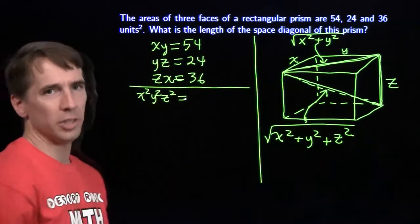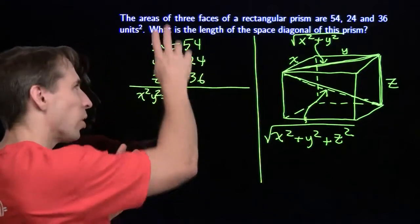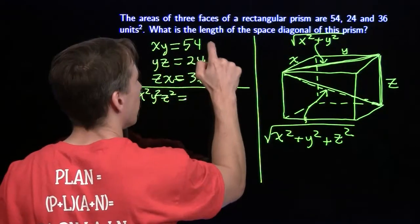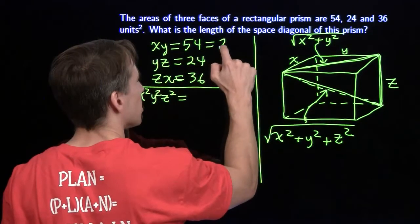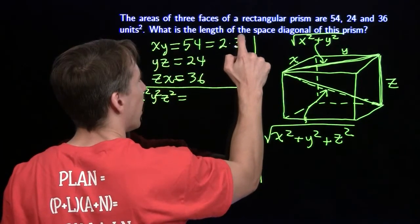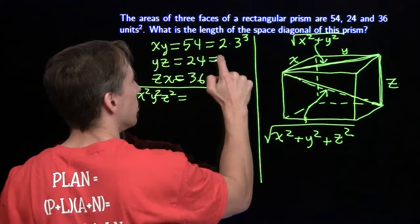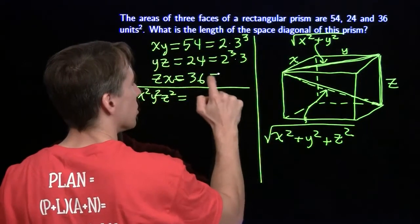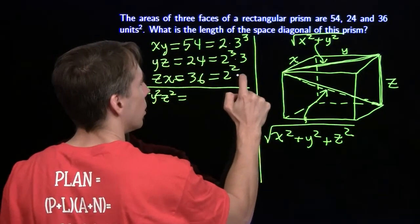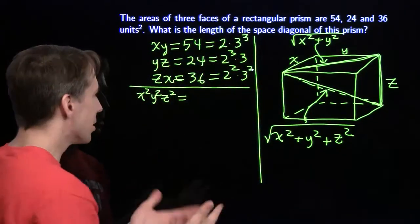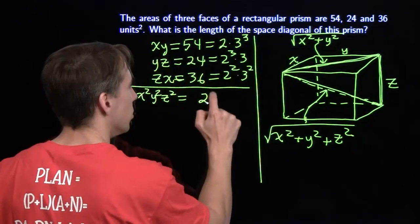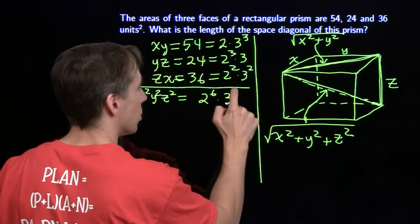Now, over here, I don't want to multiply all these numbers out. I'm going to think, whenever I start thinking about products and divisibility, I start thinking in terms of prime factorizations. This is 2 times 3 cubed, this is 2 cubed times 3, and this is 2 squared, 3 squared. So when I multiply all these together, we've got 2 to the sixth times 3 to the sixth.